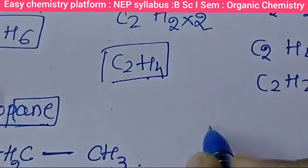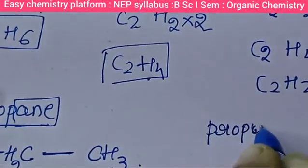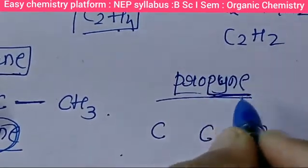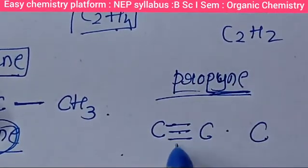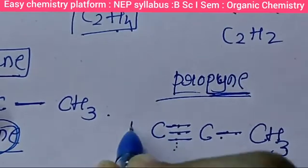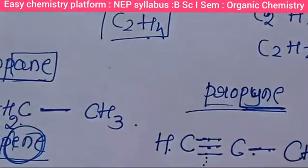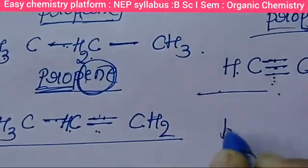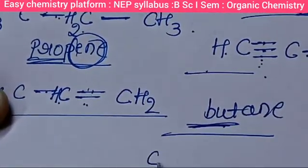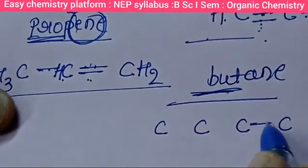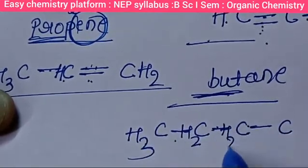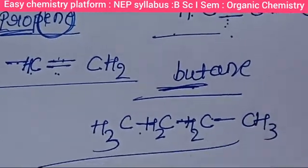Propyne has three carbon atoms with a triple bond, giving the formula C3H4. Now, butane — but means four carbon atoms with single bonds. The structure is CH3–CH2–CH2–CH3. So the butane formula is C4H10. For example, if a structure has one, two, three carbon atoms with a single bond and double bond, the name is propene. If it has three carbon atoms with only single bonds, it is propane.